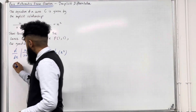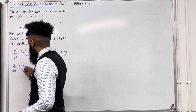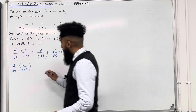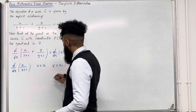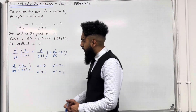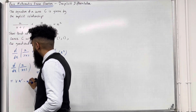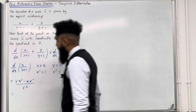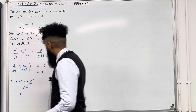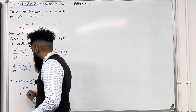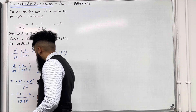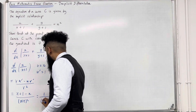Let's start off with d over dx of x over x plus 1. We have a fraction so we can differentiate using the quotient rule. Let u equal x and v equal x plus 1, so u dash equals 1 and v dash equals 1. By the quotient rule, v u dash minus u v dash over v squared, we get x plus 1 minus x, all over x plus 1 squared. This simplifies to 1 over x plus 1 squared.